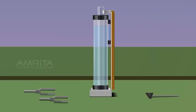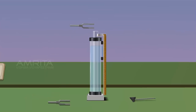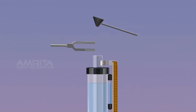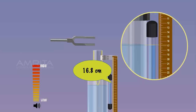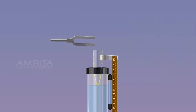Procedure: Take the tuning fork of frequency 512 Hz and place it horizontally over the open end of the tube. Excite it by striking it with a rubber hammer. It starts vibrating. Raise the tube slowly along with the tuning fork. Stop raising the tube when the maximum sound is heard. Note the length of the air column at that position.